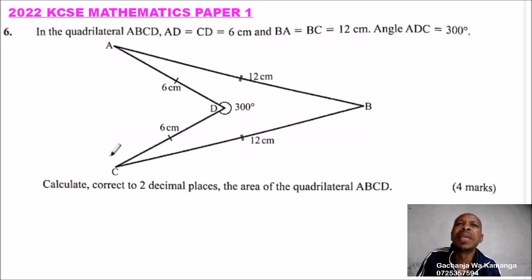ABCD, AD is equal to CD is equal to 6 cm. So AD is equal to CD is equal to 6 cm. We are shown that. And BA, that is BA, is equal to BC, is equal to 12 cm. Those two sides are also equal.